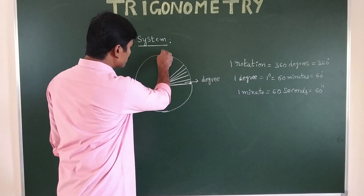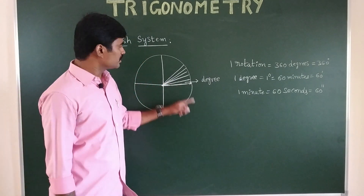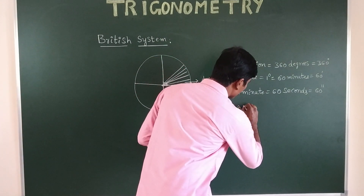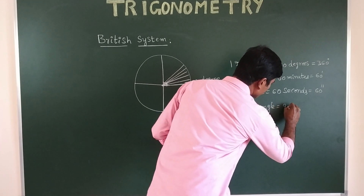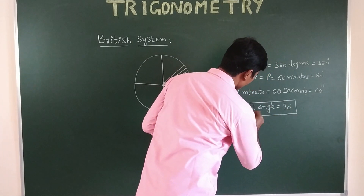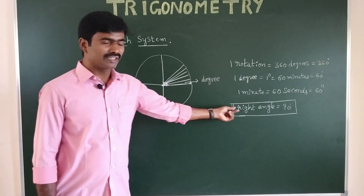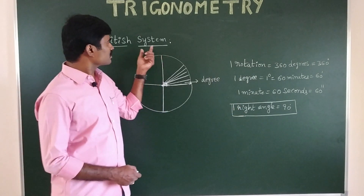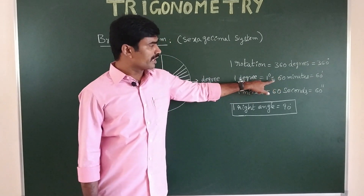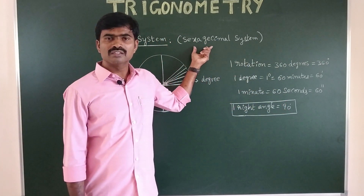The rotation is also divided into four equal parts called four quadrants, and each quadrant is a right angle. So one right angle equals 360 divided by 4, which is 90 degrees. This is important because we use it to convert from one system to another. So one right angle equals 90 degrees. The British system is also called the sexagesimal system — 'sexa' means 60 — because each degree is divided into 60 minutes and each minute into 60 seconds.